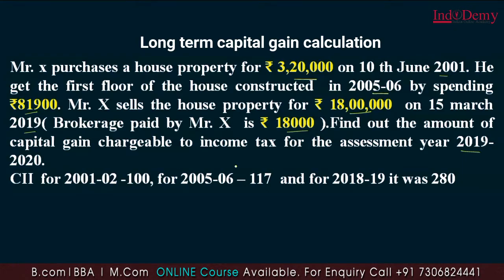Find out the amount of capital gain chargeable to income tax for the assessment year 2019-20. The property holds long term capital gains as it is held for more than three years. CII is provided: the starting point base year is 100. For 2005-06, the improvement year CII, and for 2018-19 the previous year CII is 280.